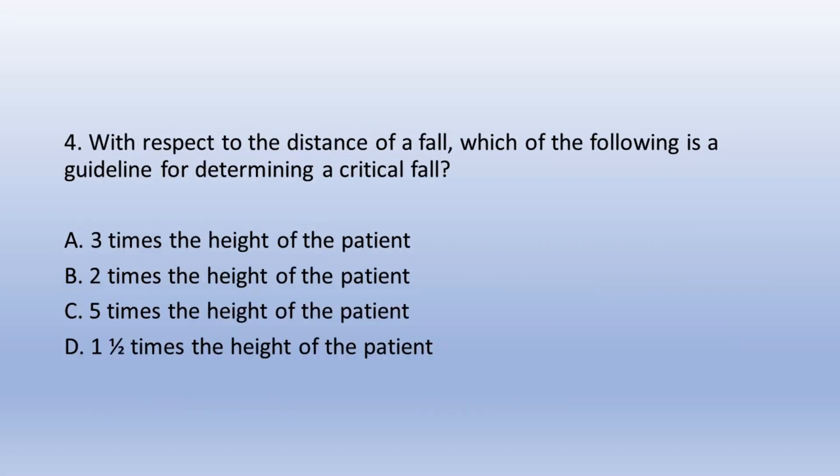Question 4. With respect to the distance of a fall, which of the following is a guideline for determining a critical fall? A. Three times the height of the patient, B. Two times the height of the patient, C. Five times the height of the patient, D. One and a half times the height of the patient. The answer is A. Three times the height of the patient.